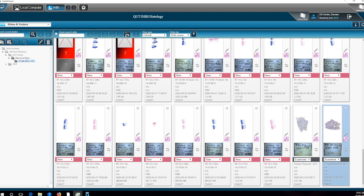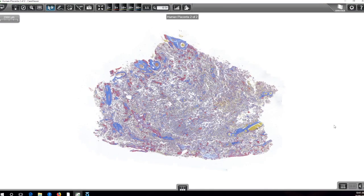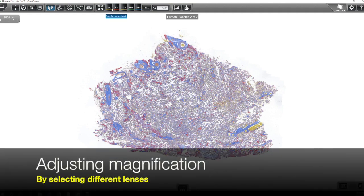If we scroll down here to the bottom, we've got a nicely stained control section of placenta. And so there's the full scanned image and it looks pretty good, but of course we would want to change the magnification.